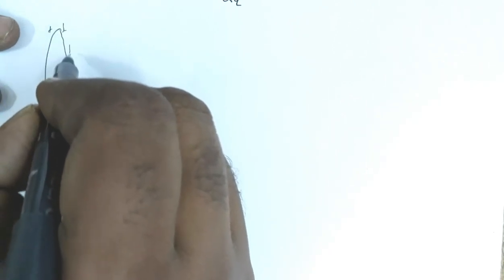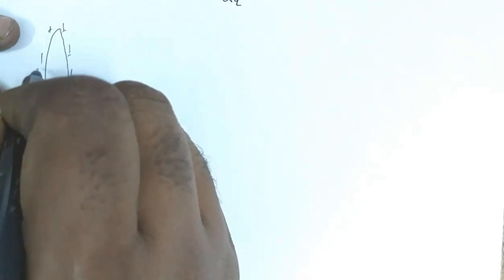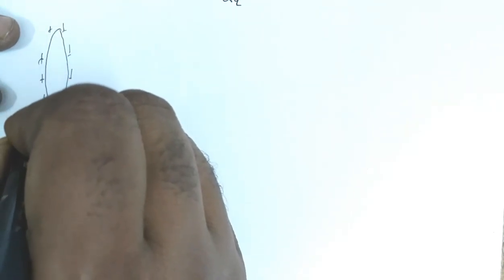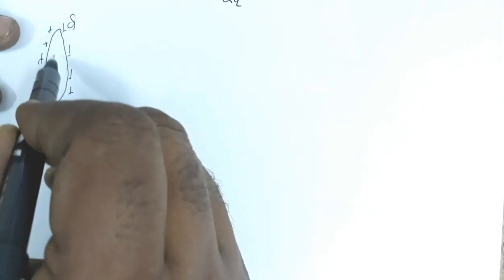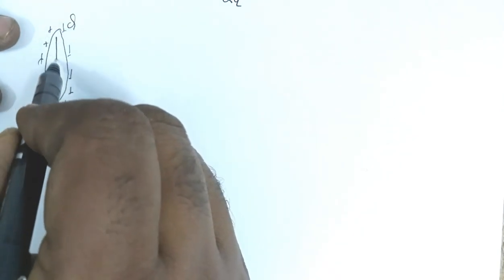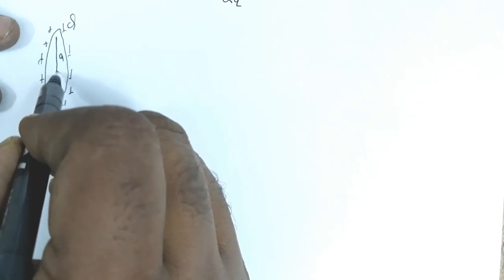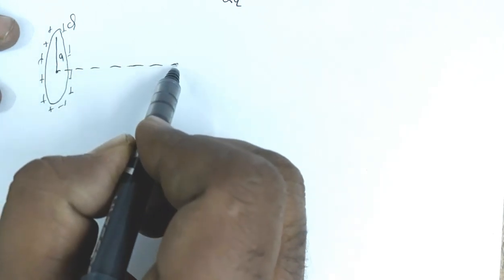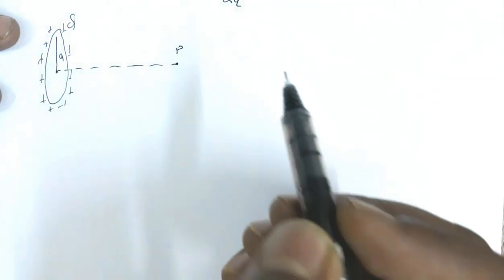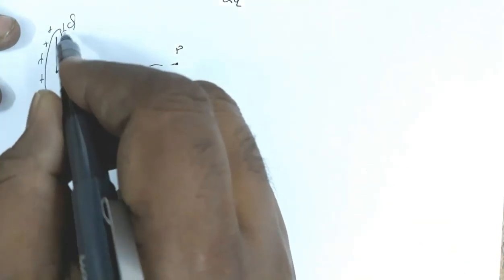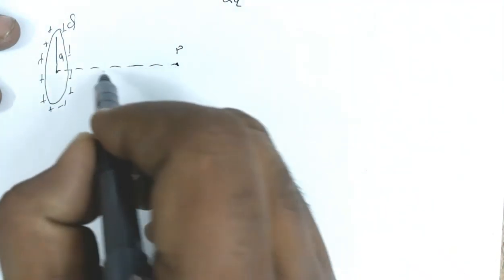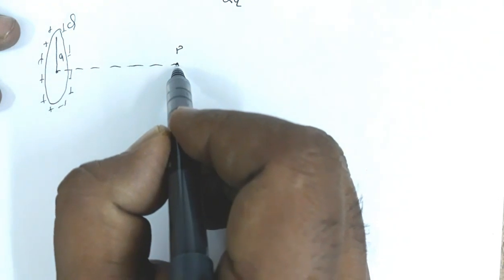Now similarly, if you have a ring of charge — a positively, uniformly charged ring — where Q is the charge and radius is a. This is the center, this is the axis, and this is some point P. If this ring is positively charged, the electric field will be along this axis away from the ring.